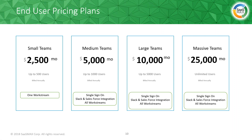Let's dive into pricing. We have small, medium, large, and extra large tiers. Small teams are up to 500 users at $2,500 a month with one work stream. Medium teams are $5,000 a month for up to 1,000 users, and you get single sign-on, Slack, and Salesforce integration, plus all the work streams you need. Large teams are $10,000 a month for up to 5,000 users with the same integrations and as many work streams as you can think of. The enterprise or extra large tier is $25,000 a month, unlimited users, with single sign-on, Slack, and Salesforce integration, plus all the work streams you could possibly need.